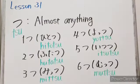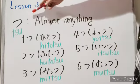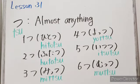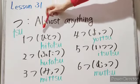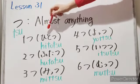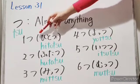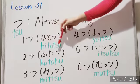And another common way is tsu. Like ko, you can count almost anything. Let's practice it. One — hitotsu. Two — futatsu.